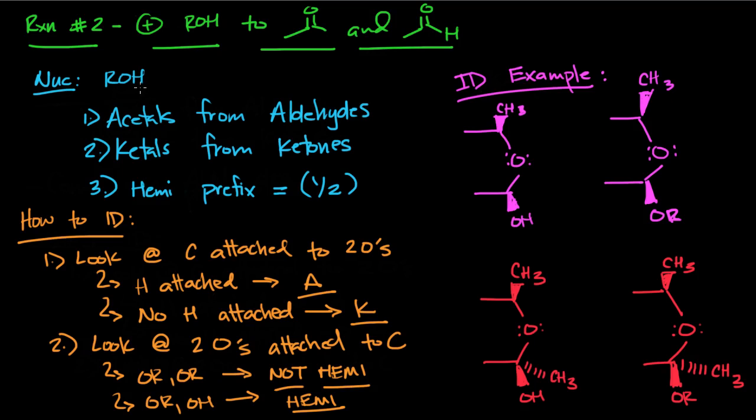A couple things about terminology. Acetyls come from aldehydes, so A goes with A. Ketiles come from ketones, so K goes with K. If there's a prefix in front of the acetal or the ketal, like hemiacetal or hemiketal, that means it's one half—that means only one alcohol has attached or has attacked. If there's no hemi in front of it, that means two alcohols have attacked and substituted.